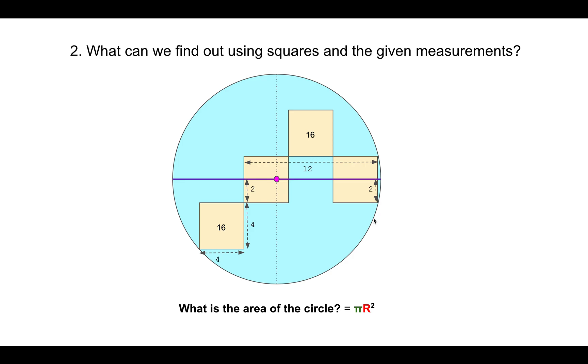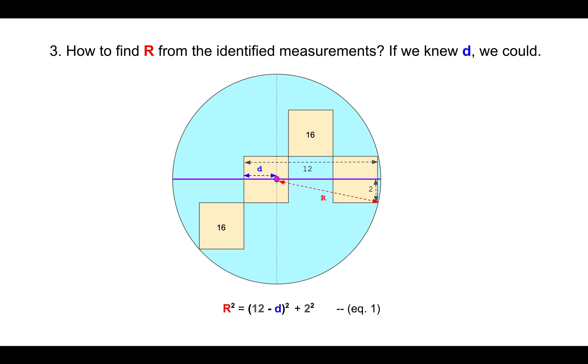Once we have all of these measurements, what's the next step? The next step is to come back and focus on finding the radius. So how do we actually find the radius from the identified measurements?